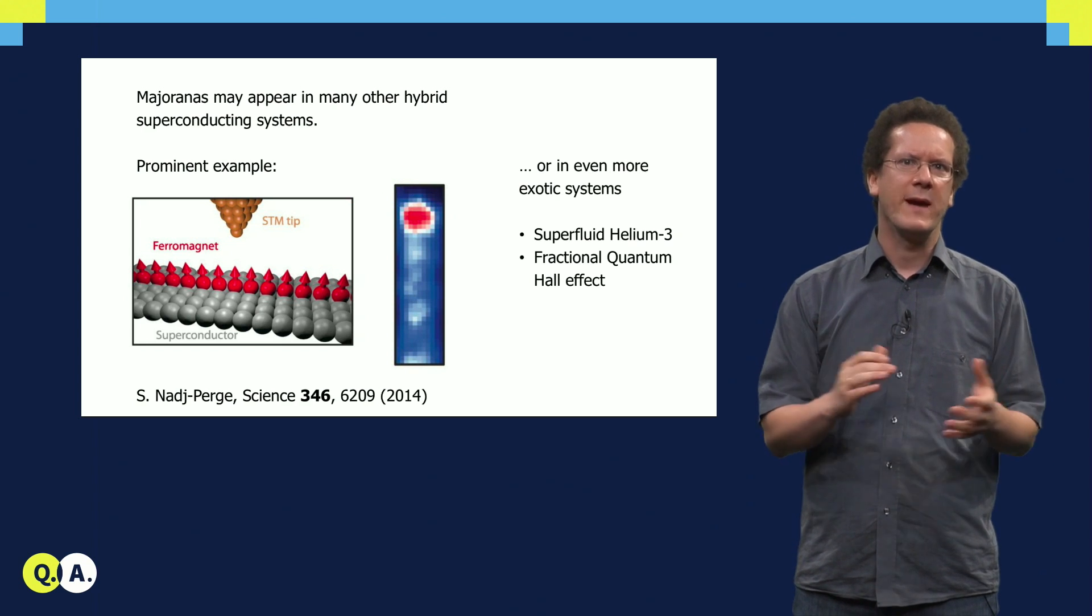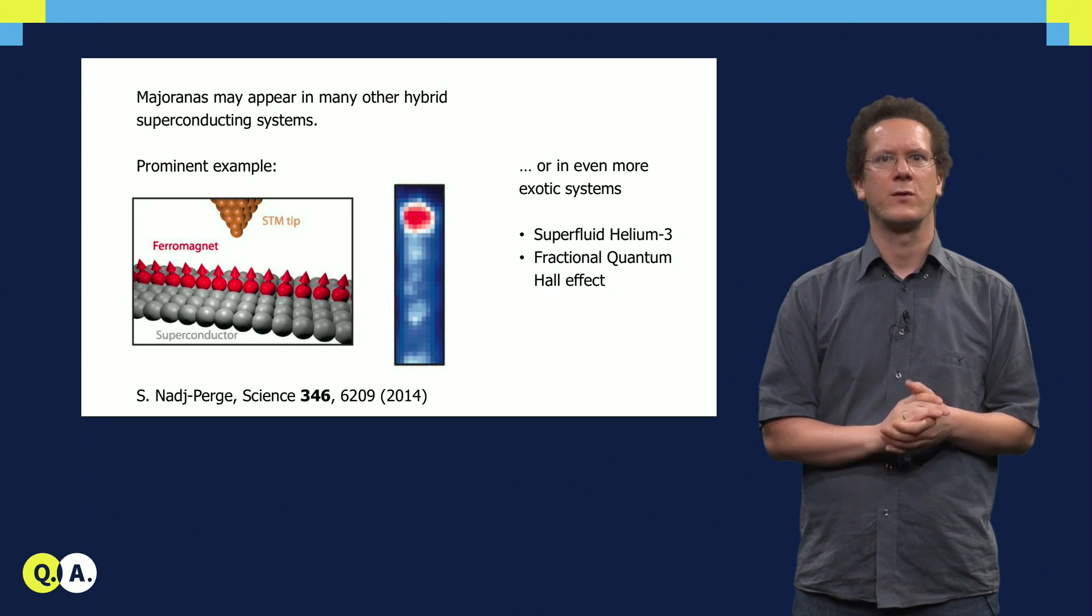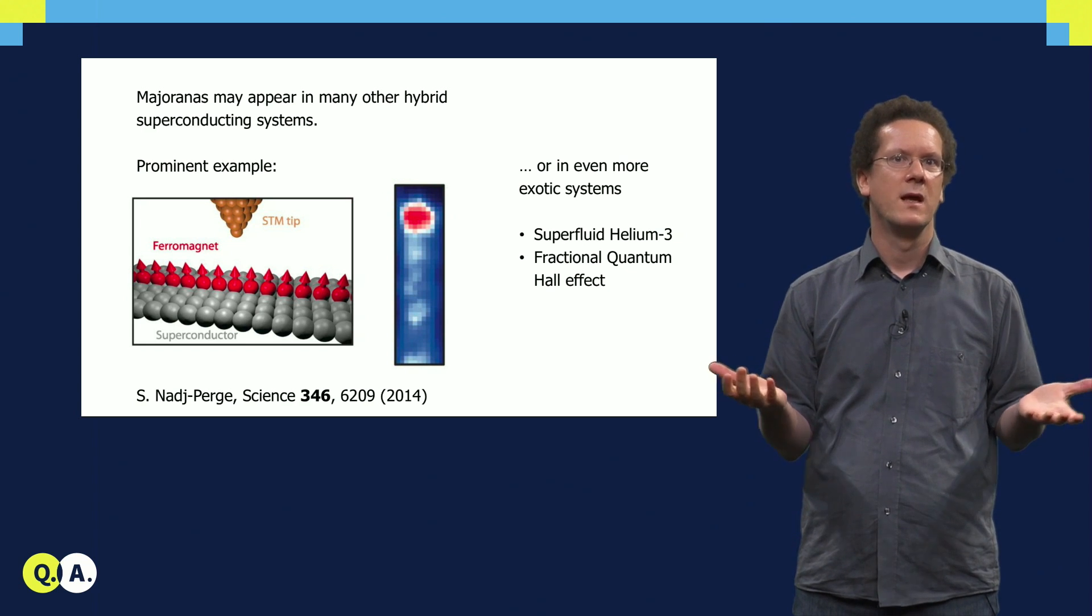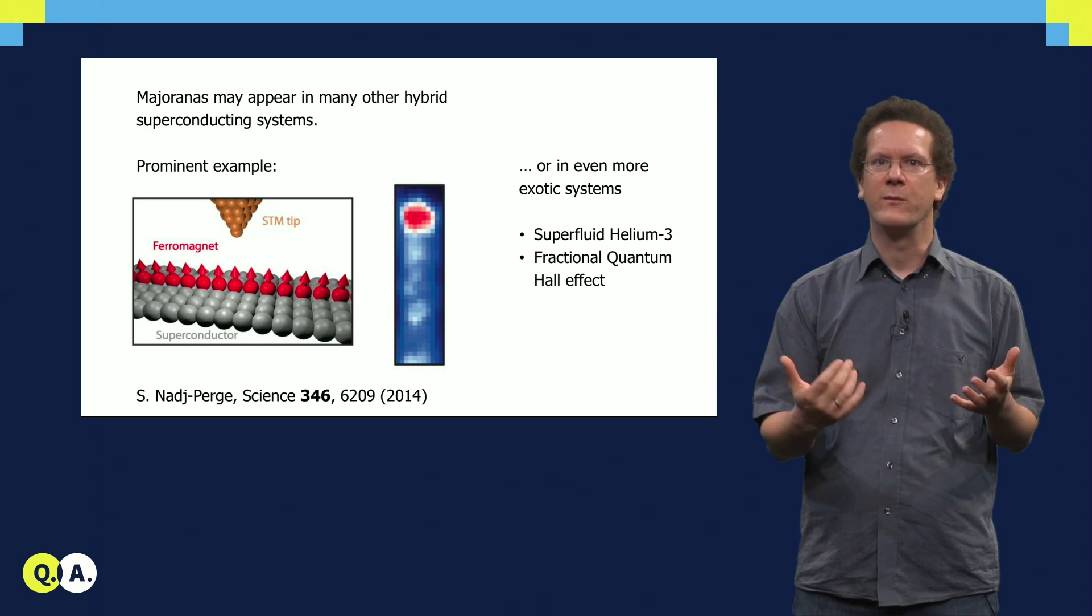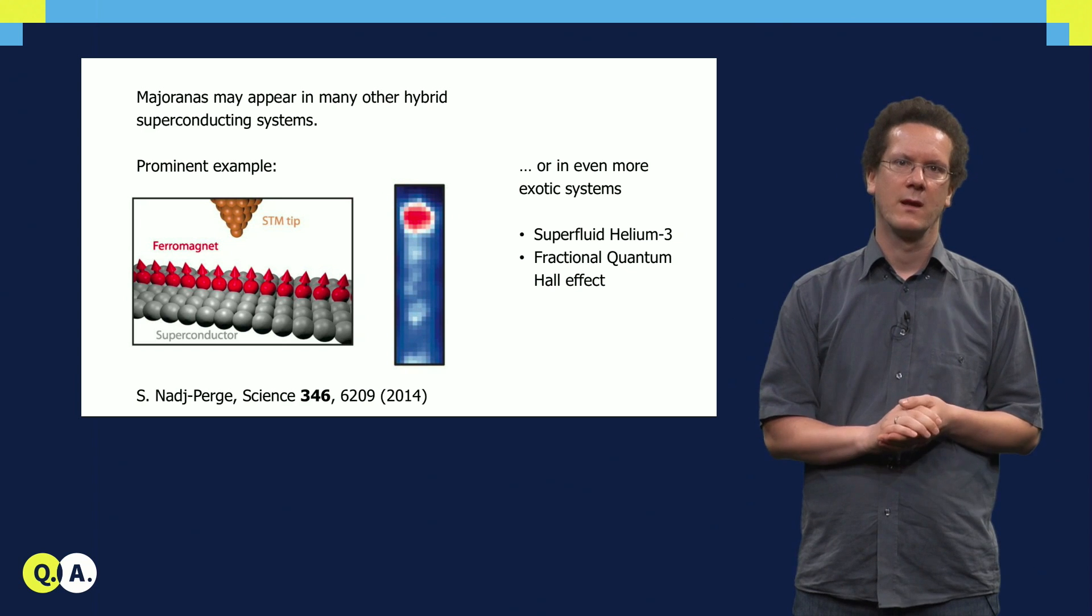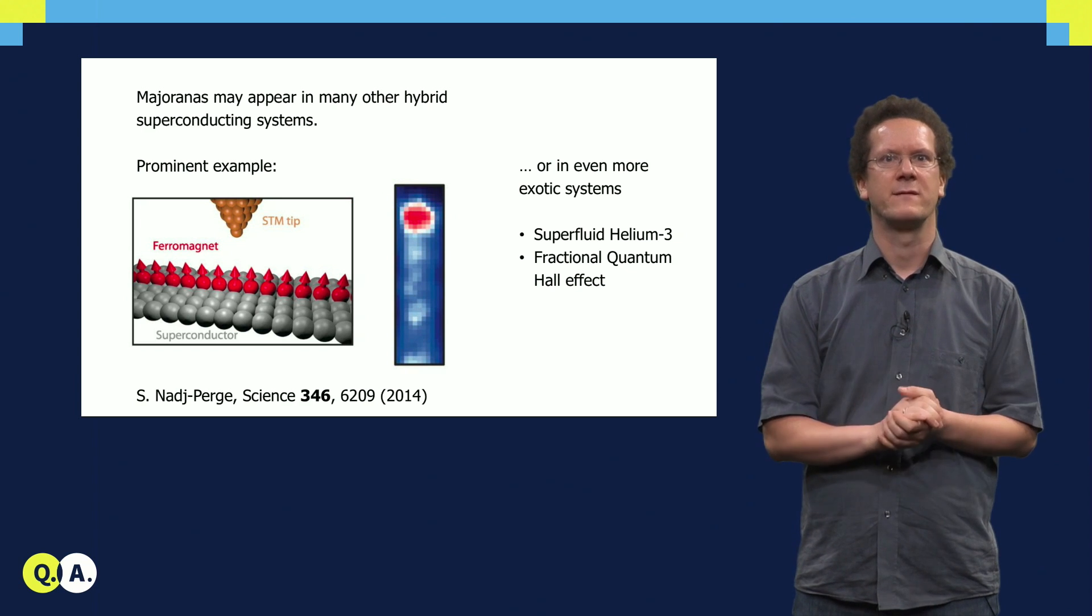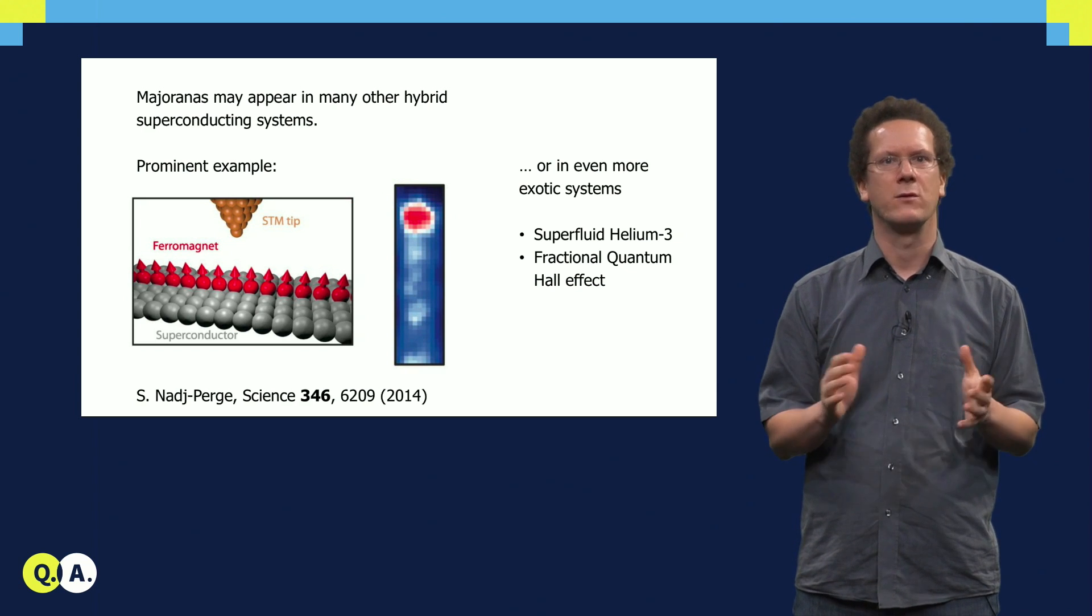I also want to mention that actually Majorana particles do not only exist in superconducting systems, as I showed you, but they can also appear in interacting systems, for example superfluid helium or fractional quantum Hall effect. But so far, nanowire-based systems remain the most technologically advanced.